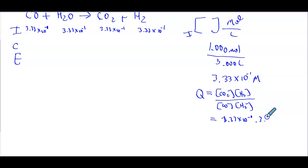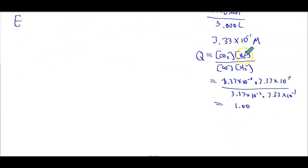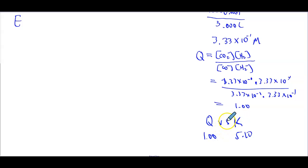divided by 3.33×10⁻¹ times 3.33×10⁻¹. When I multiply that out, I get Q = 1.00. So then we do Q versus K: K is 5.10 and Q is 1.00. Since Q is less than K, the reaction will shift to the right.